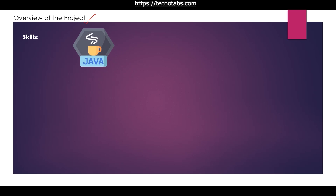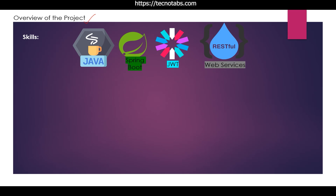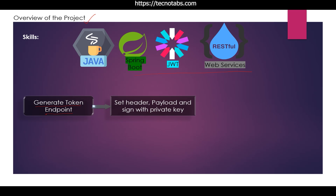We are going to make a project in this video. The skills we will learn are Java, Spring Boot, JWT, and web services. In this project, we will expose a REST endpoint that generates a JWT token. It will take the header and the payload, sign it with a private key, and the output will be a generated JWT token. This is the client-side code.